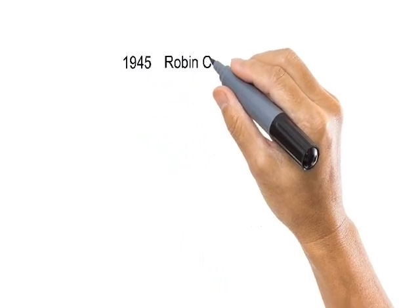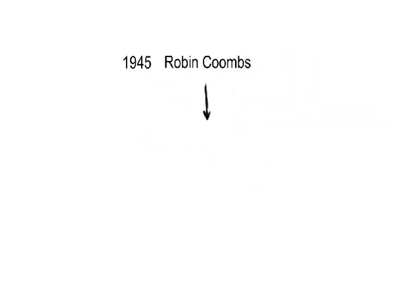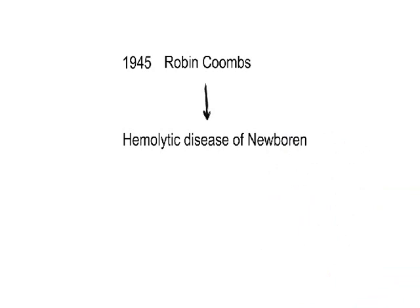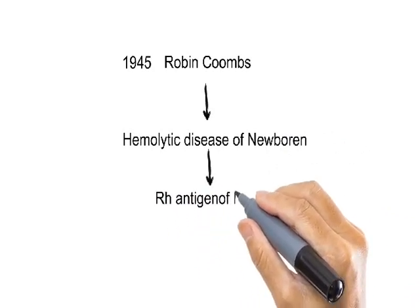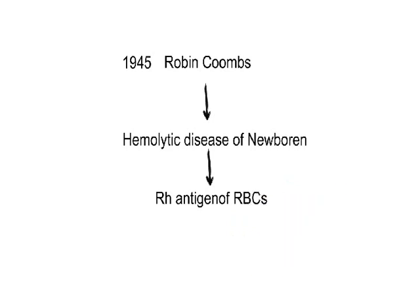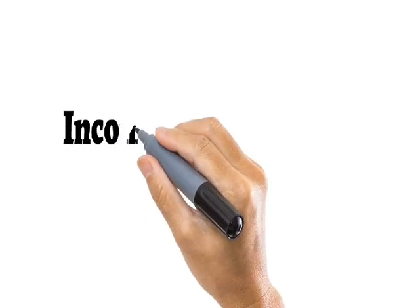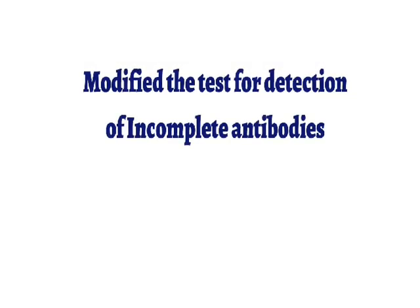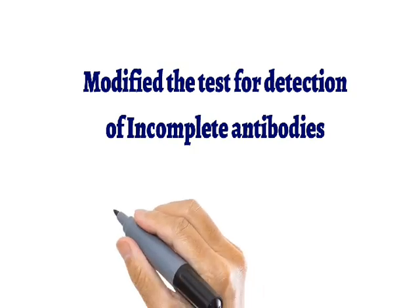In 1945, scientist Robin Coombs studied low-grade antibodies formed in a condition known as hemolytic disease of the newborn. These low-grade antibodies are formed against the RH antigen present on the surface of RBCs. He called these anti-RH antibodies 'incomplete antibodies' because they can bind to the surface of RBCs but cannot agglutinate them. This led Coombs to modify the existing test for antibody detection, now popularly known as the Coombs test.